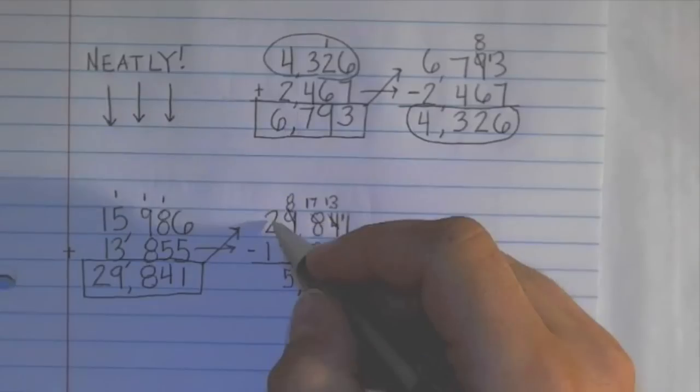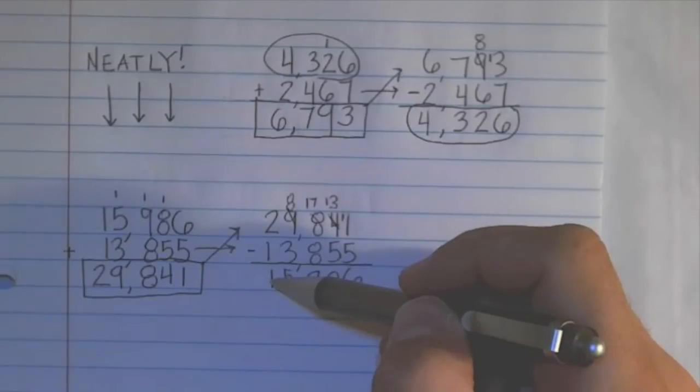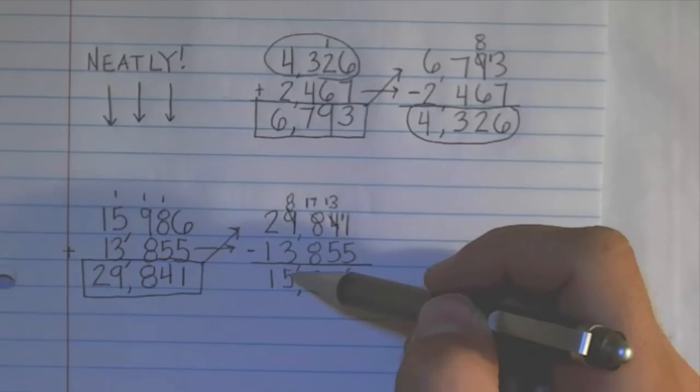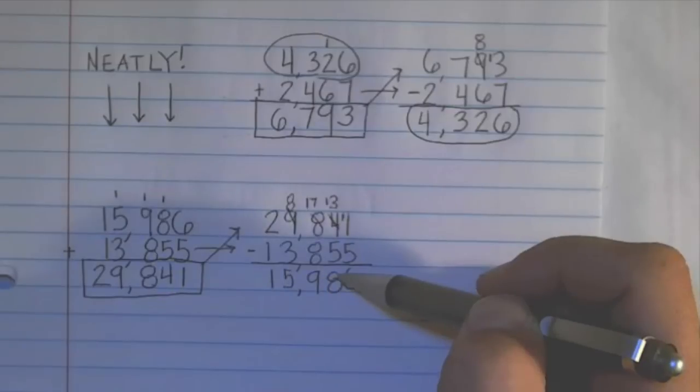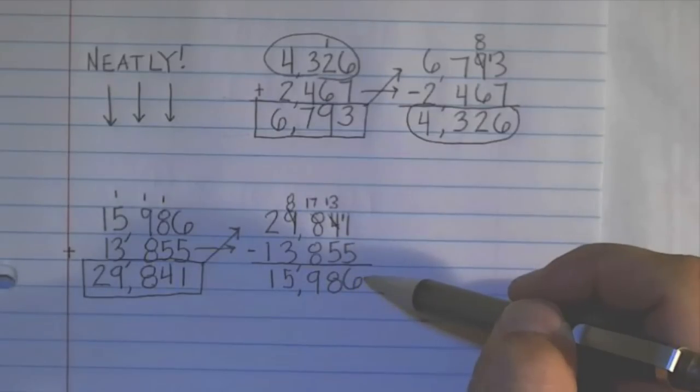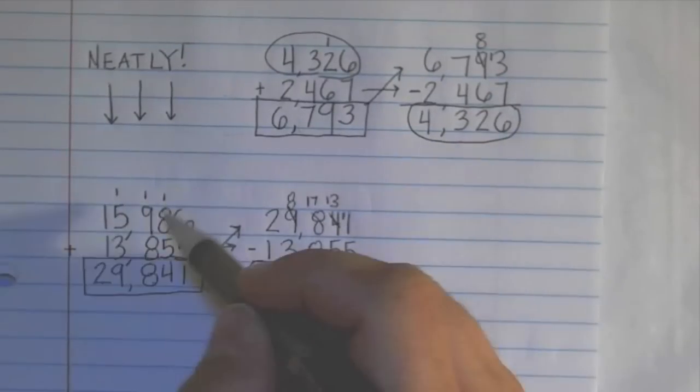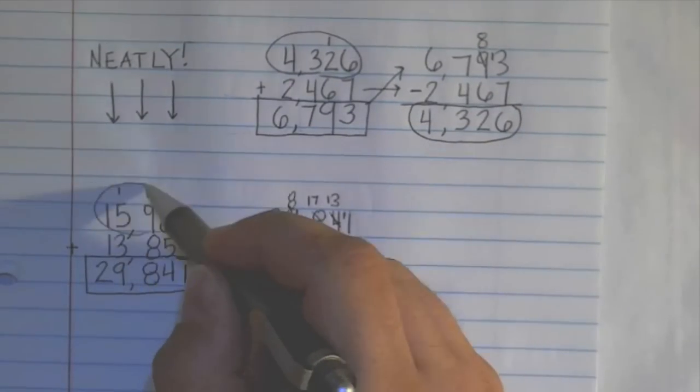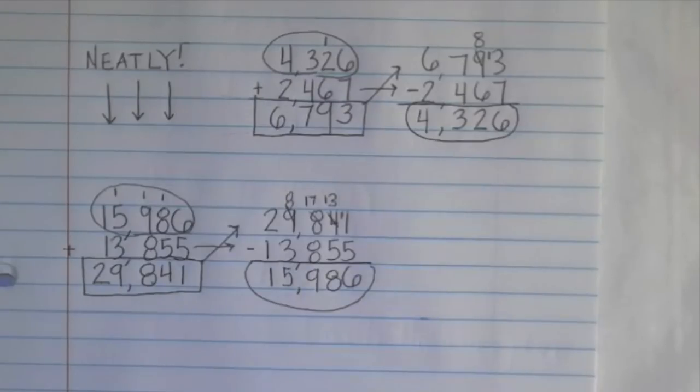And 2 minus 1 is 1. So now we have a 1 in the 10,000s place, 5 in the 1,000s place, 9 in the 100s place, 8 in the 10s place, and 6 in the 1s place. So we have 15,986, and that's what we had up here, 15,986. So we know our answer is correct using the inverse operation.